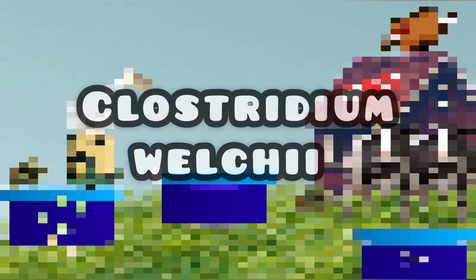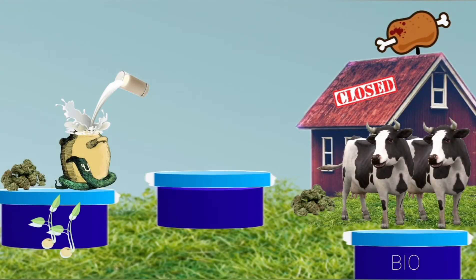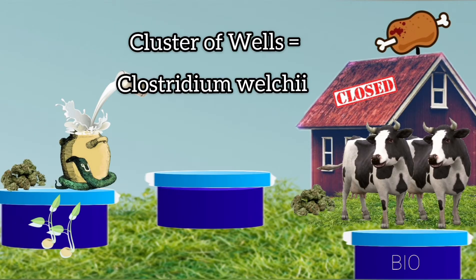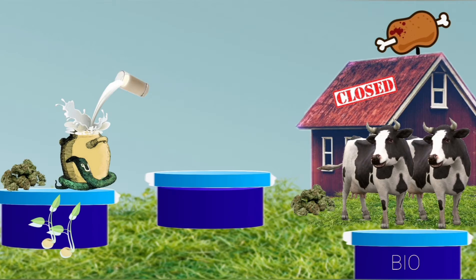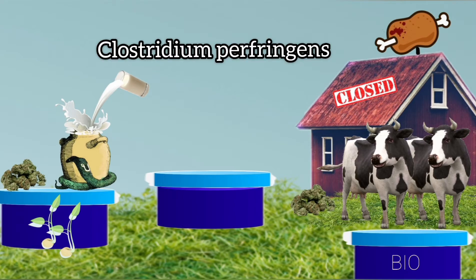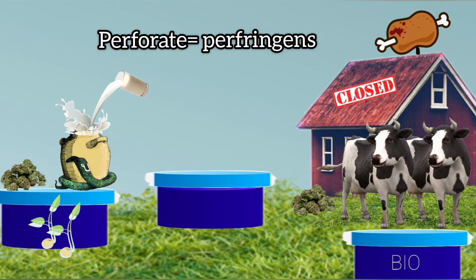Today's mnemonic is about Clostridium welchii. In the picture you can see a cluster of wells. A cluster of wells should remind you of Clostridium welchii. So Clostridium welchii is also known as Clostridium perfringens. You can see meat here which is perforated by the bone, so from the word perforate, perfringens. We'll come to the story about the meat later on.